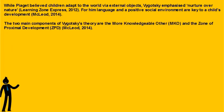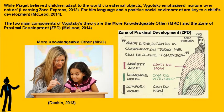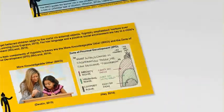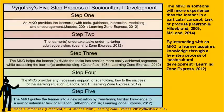While Piaget believed children adapt to the world via external objects, Vygotsky emphasized nurture over nature. For him, language and a positive social environment are key to a child's development. The two main components of Vygotsky's theory are the more knowledgeable other and the zone of proximal development.